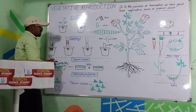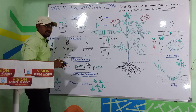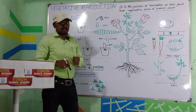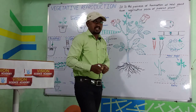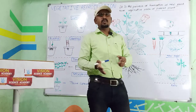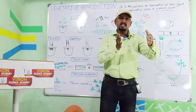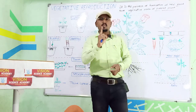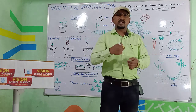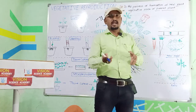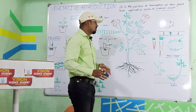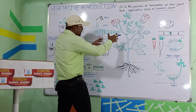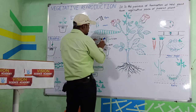Grafting is a scientific technique. In grafting, two plants are joined together and one plant is grown. The plant that provides the root system is the stock, and the part that is grafted onto it is called the scion.